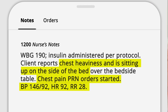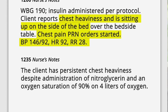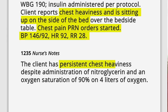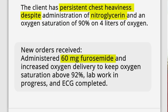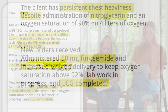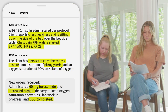At 12:35, the nurse makes another note: the client has persistent chest heaviness despite administration of nitroglycerin and an oxygen saturation of 90% on four liters of oxygen. New orders received — administer 60 milligrams furosemide, increase oxygen delivery to keep oxygen saturation above 92%. Lab work in progress and ECG completed.